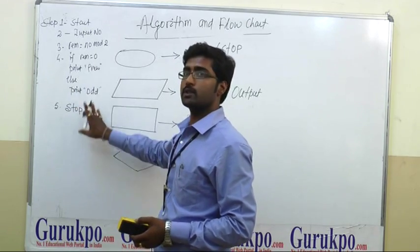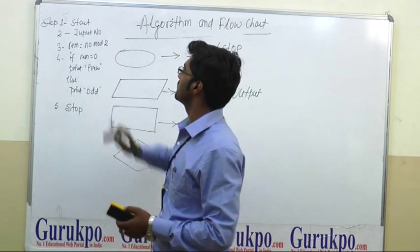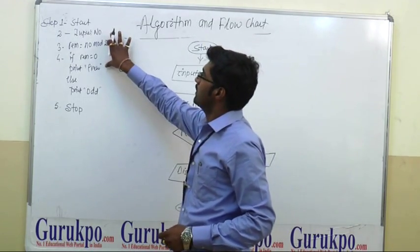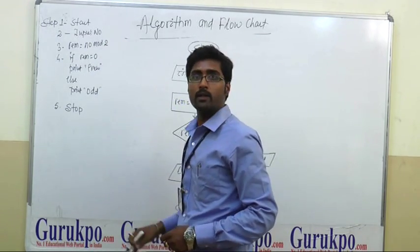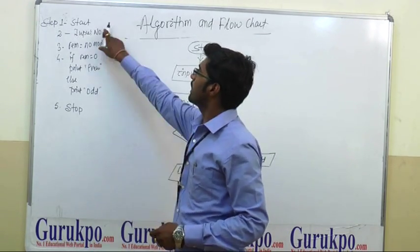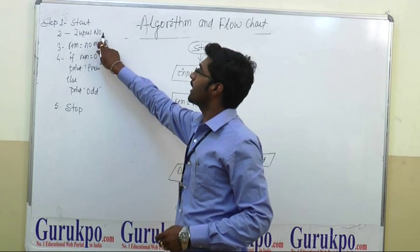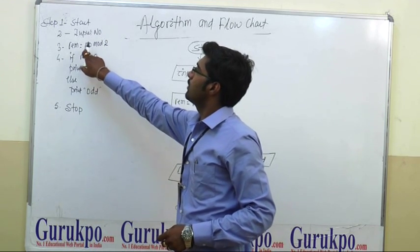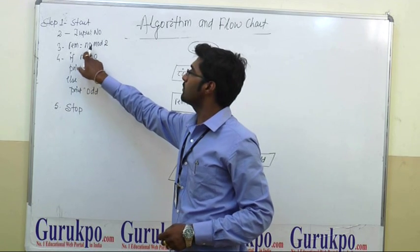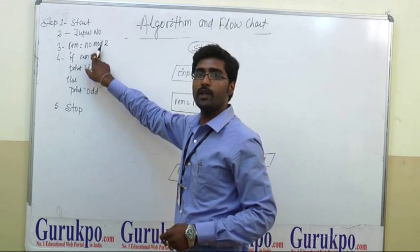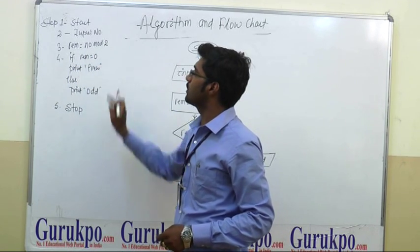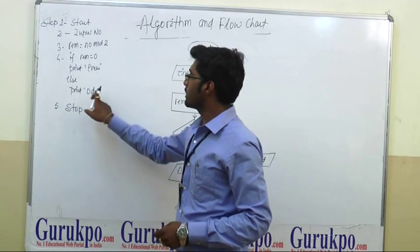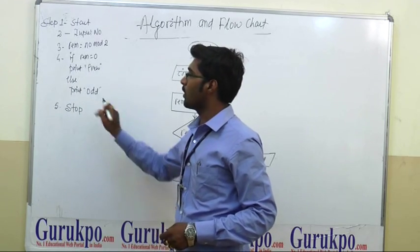Now we have to draw the flowchart of this algorithm. Step one: start. Step two: input number. Step three: find the remainder of the given number. If the remainder is equal to zero, then print 'even,' else print 'odd.'